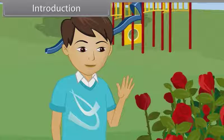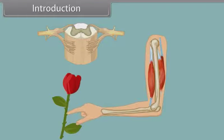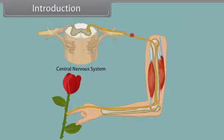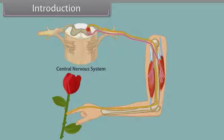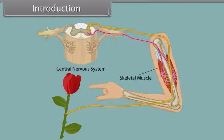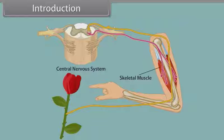Let's see more closely. When he touches the stem of the flower, the thorn on it pinches him and sensors detect stimuli present below the skin. This stimuli passes to the central nervous system and in response, the skeletal muscles contract and he withdraws his hand. Throughout this module, we learn neural control and coordination.